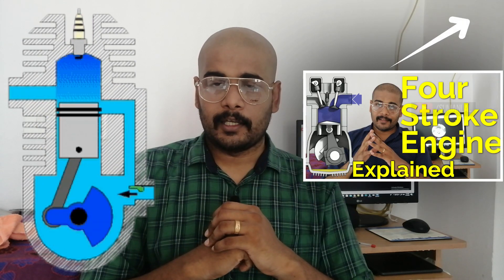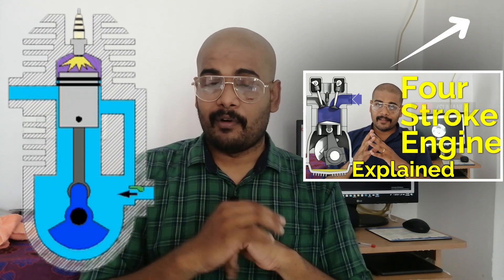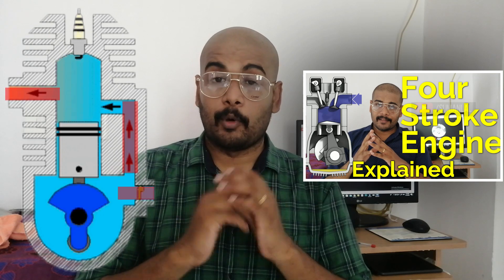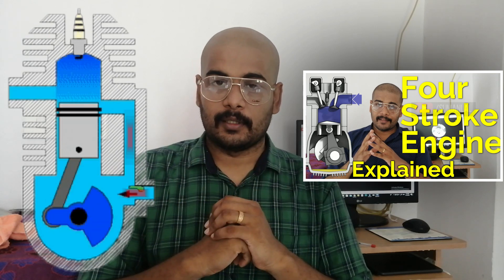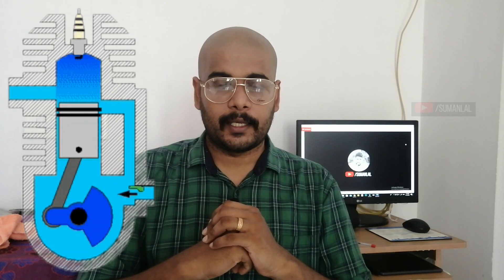If we click on the bell icon, we will also see that a 2-stroke engine. We use a spark plug in a petrol engine. When compared to a 4-stroke engine, we use our valve.